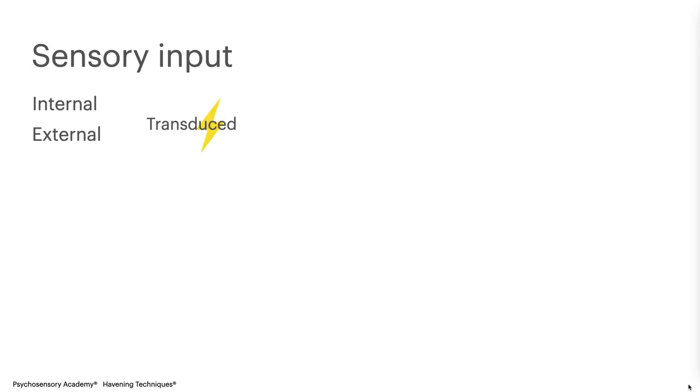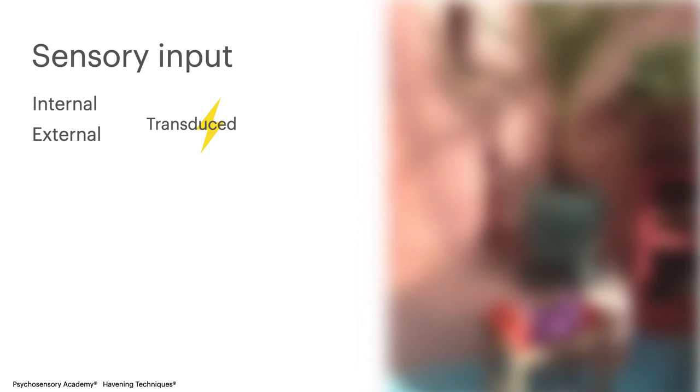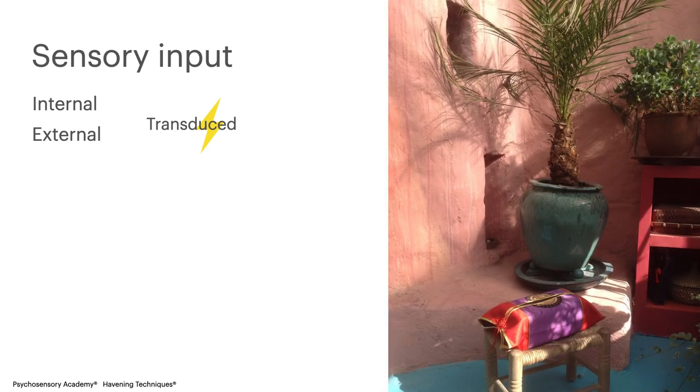We know that sensory input, whether it's internal or external, is transduced electrically. When we're seeing, we're making sense of the information. We're smelling, touching, feeling the temperature—what would the temperature be like in this room, and what would be the sense?